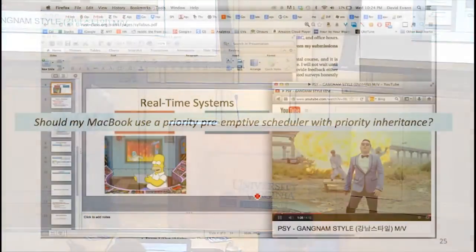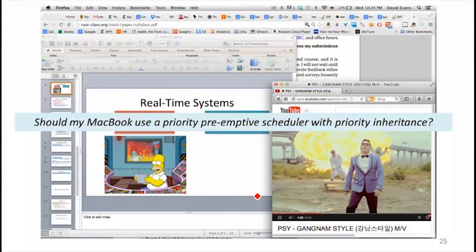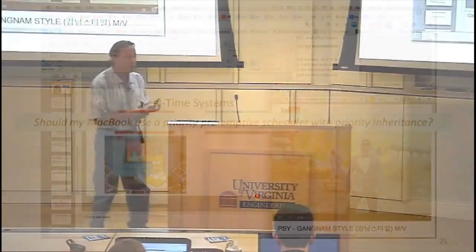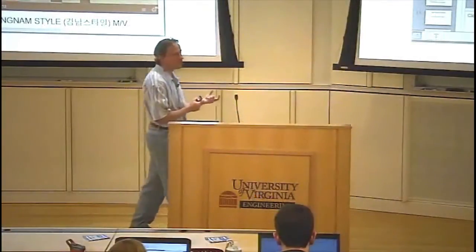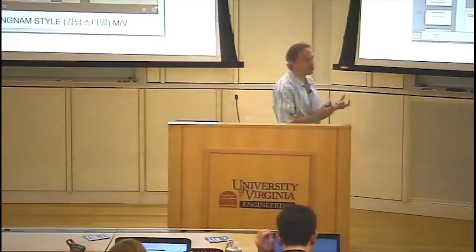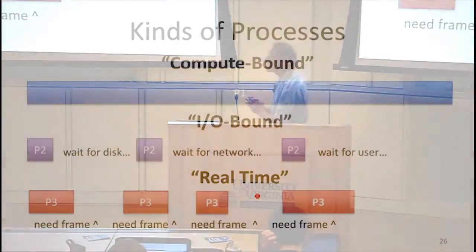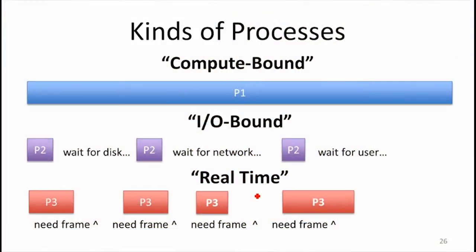You have others that are doing things like playing video where they have real-time requirements — you need each frame rendered at the frame rate, but giving them more resources than that isn't useful. So you've got lots of different kinds of processes. If you want a scheduler to give a user a good experience and use resources well, it shouldn't treat all processes the same.